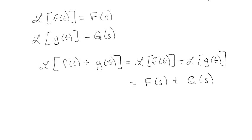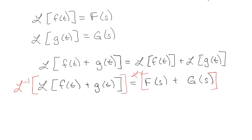Now, what I can do is I want to take the inverse Laplace of both sides because I can do that because it's like taking the square root of both sides of an equation. So I have on the left the inverse Laplace of the Laplace of something is just f of t plus g of t equals to the inverse Laplace of f of s plus g of s.